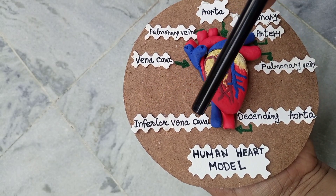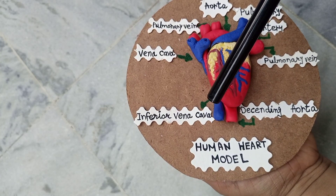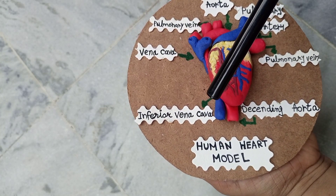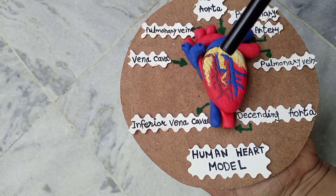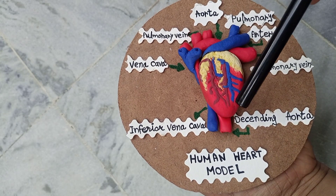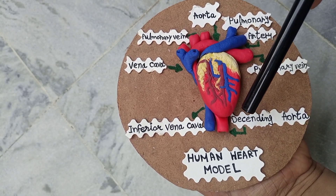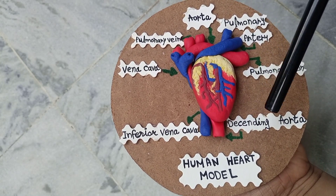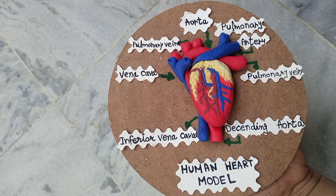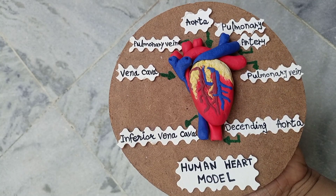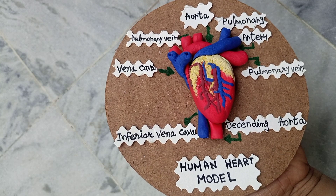So the three types are: first, arteries; second, capillaries; and third, veins. Capillaries are very small and thin blood vessels that connect the arteries and veins together.